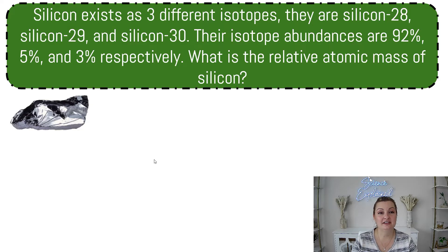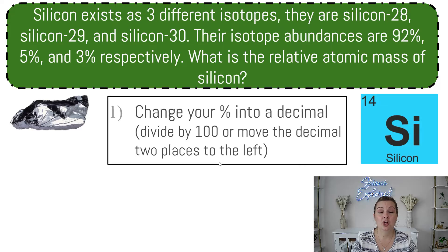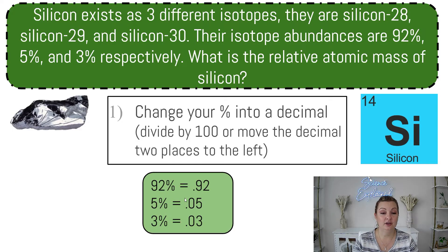Let's try one. Silicon exists as three different isotopes: silicon-28, -29, and -30. Their isotope abundances are 92%, 5%, and 3% respectively. What is the relative atomic mass of silicon? Well, we're going to look at step one: change our percentages to a decimal. We can do that in two ways — divide by 100, or move the decimal two places to the left. So if I move this two to the left, I get 0.92; two to the left gives 0.05; and then 0.03.